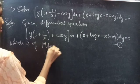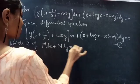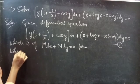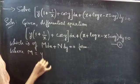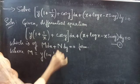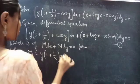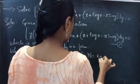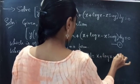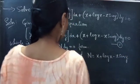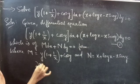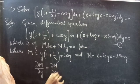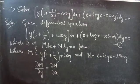M dx plus N dy equals to 0 form. By comparing these two, we will get M and N, where M equals to y times (1 plus 1 by x plus cos y) and N equals to x plus log x minus x sin y. If the partial derivative of M with respect to y is equal to the partial derivative of N with respect to x, then we can say that the given differential equation is an exact equation.